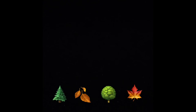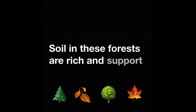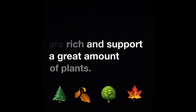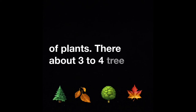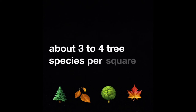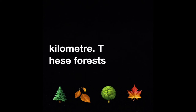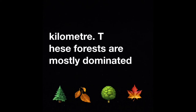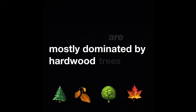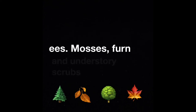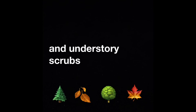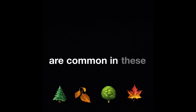Flora: the soil in temperate forests is rich and supports a great amount of plants. There are about 3 to 4 tree species per square kilometre. These forests are mostly dominated by hardwood trees like oak, willow and maple. Mosses, fern and understory shrubs are also common in these forests.